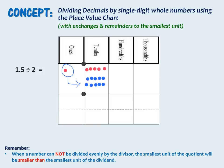Now we have 15 tenths that have to be divided into 2 equal groups. We know that 15 is an odd number, so it is not going to divide evenly by 2. We can put 7 in each group — using 14 tenths — and we have 1 left over. So now we're going to take that 1 and unbundle it into 10 hundredths.